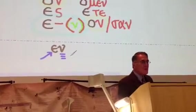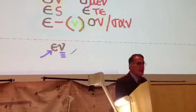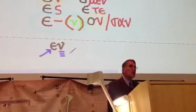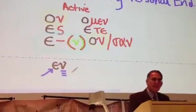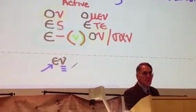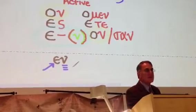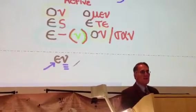So nu, sigma, nothing, and nothing — men, ten, nu, or san — are the secondary personal active endings.